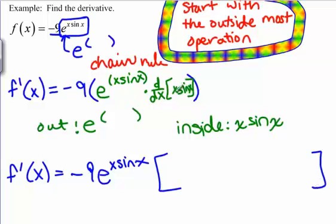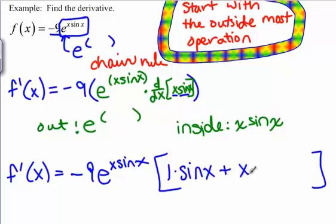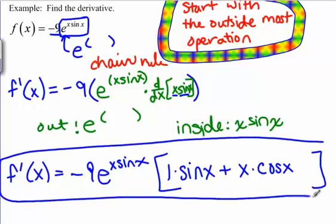To find the derivative of x sine x, we need to use the product rule because it's x times sine x. We have the derivative of the first — the derivative of x is 1 — times the second unchanged, so that's sine x, plus the first unchanged, so that's x, times the derivative of the second, so that's the derivative of sine, which is cosine x. That whole thing is the derivative of e to the x sine x times negative 9.